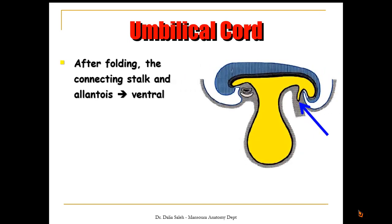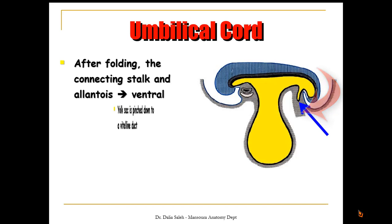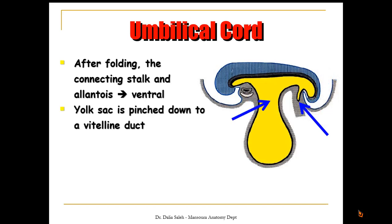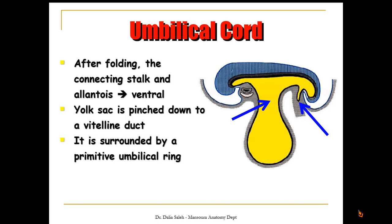Also in the fourth week, there is folding of the embryo due to expansion of the amniotic sac. After folding, the connecting stalk and the allantois move ventrally — instead of being at the caudal end of the embryo, they now move ventrally. Also, the yolk sac is pinched down to form a vitelline duct, which is surrounded by what is called the primitive umbilical ring.